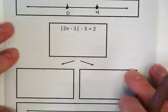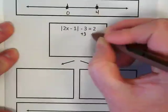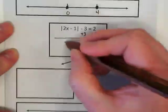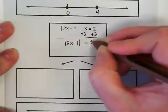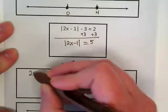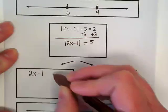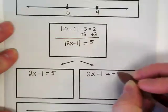Last example. What do we want to do first? Okay, so we're going to add the 3 to both sides of the equal sign. I get absolute value of 2X minus 1 by itself. It's now equal to 5. The absolute value is isolated, so we can make our positive version and our negative version. So I'm going to get 2X minus 1 is equal to 5. 2X minus 1 is equal to negative 5.